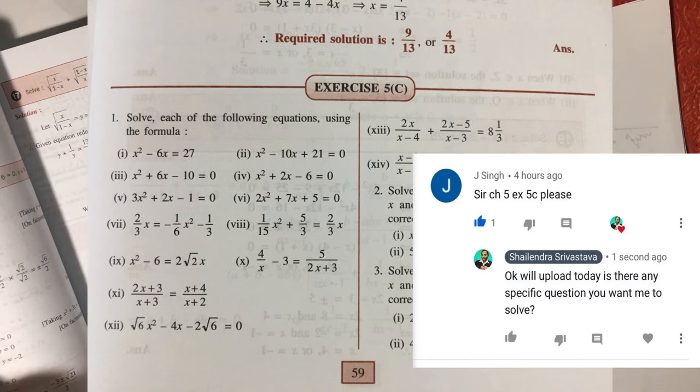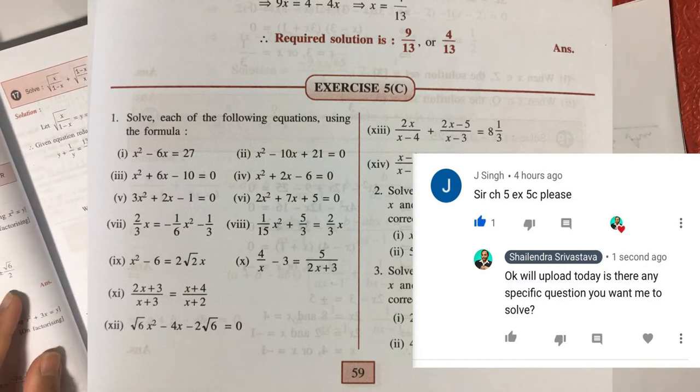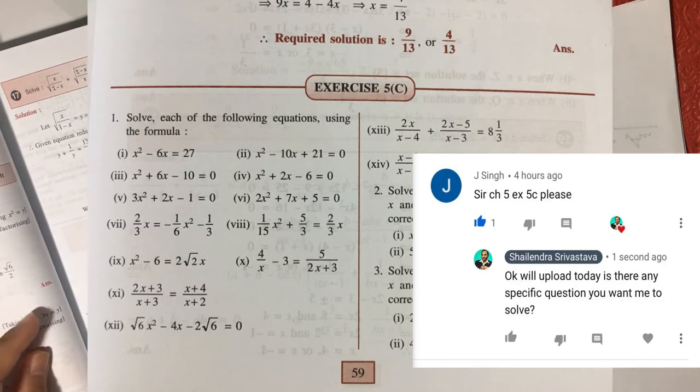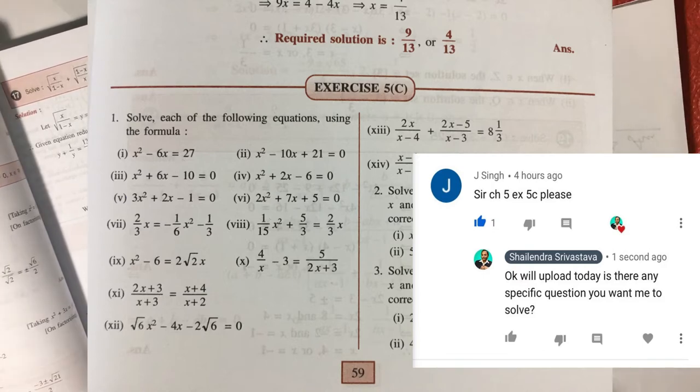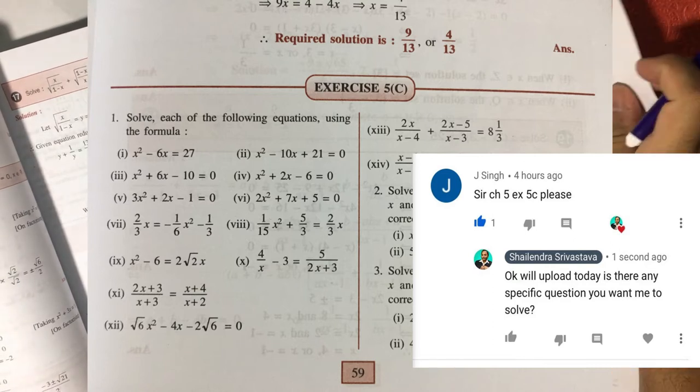In this video we are going to see the second question of Exercise 5c. We have already seen the first question x² - 6 = 27, so now we are going to see the second question.